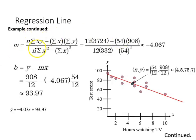Plugging in values to our equation, we get the slope, which is -4.067, and then find the y-intercept, which is 93.97. The regression line equation is ŷ = -4.07x + 93.97, and here we see the best-fitting line drawn through the data points.